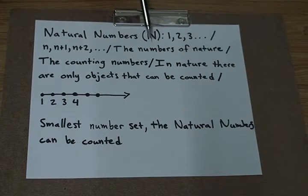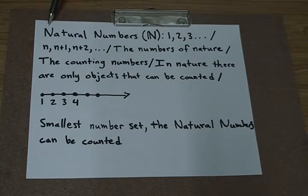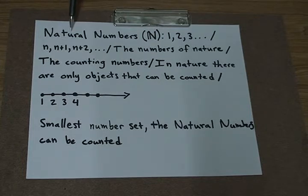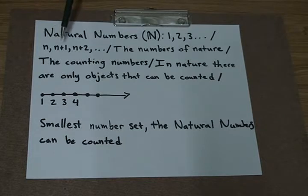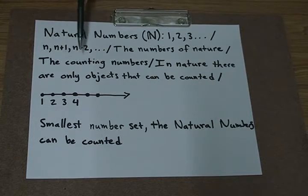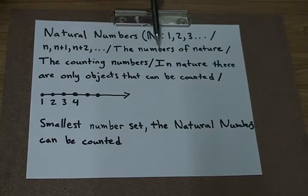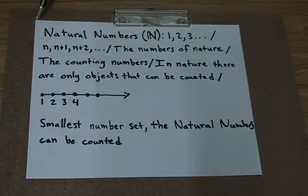The numbers of nature. Notice that it has the word natural, it looks like the word nature. This will help you remember natural numbers are the numbers of nature, the counting numbers. We can count these numbers. These are the first types of numbers that mankind created because we saw things in nature and we were able to count them. That's why they're called the natural numbers or counting numbers. In nature, there are only objects that can be counted, the natural numbers.